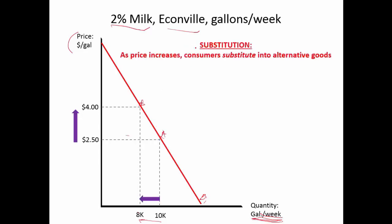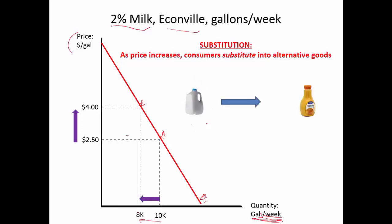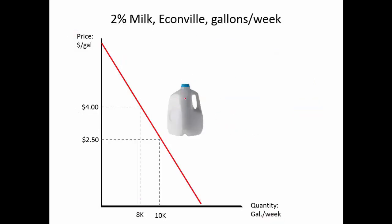Let's think about why we're making this move. As the price goes up, we have substitution happening. People buy less of this good because it's too expensive, and they're likely going to buy more of other goods. So they're substituting out of a more expensive good and into alternatives. We might be buying less milk, and with our grocery money, maybe we're buying more orange juice.